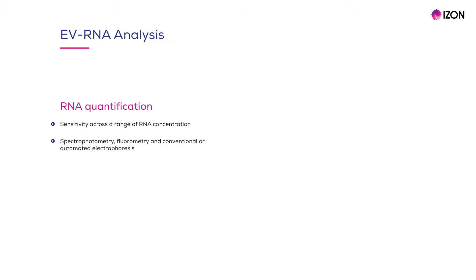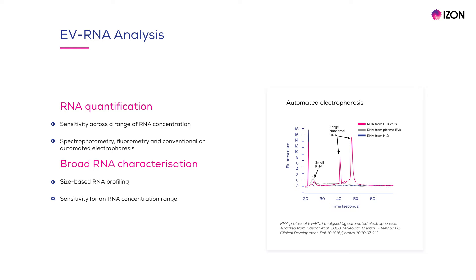Other assays can be performed to characterize RNA to different degrees. Broad RNA characterization is commonly achieved by profiling the sizes of the EV RNA species in a sample. For example, automated electrophoresis plots the time at which RNA fragments are eluted, where smaller RNA fragments elute earlier and larger RNA fragments elute later. Like in the figure shown here, the sample of cellular RNA represented by the pink line shows a higher relative abundance of large RNA fragments with size matching ribosomal RNAs and a low abundance of small RNA fragments. In contrast, the EV RNA sample represented in grey shows the presence of mostly small RNA.